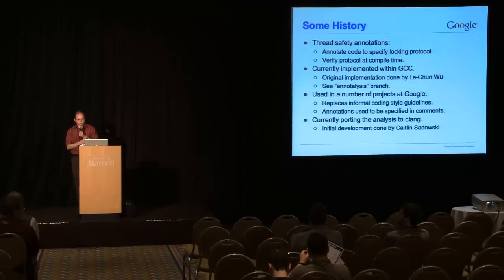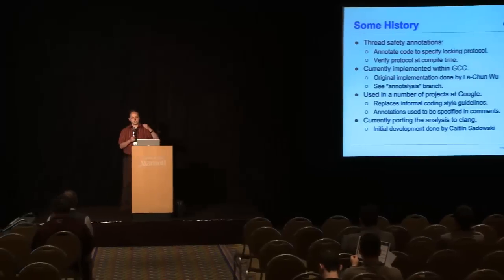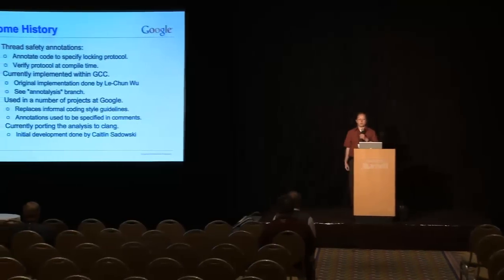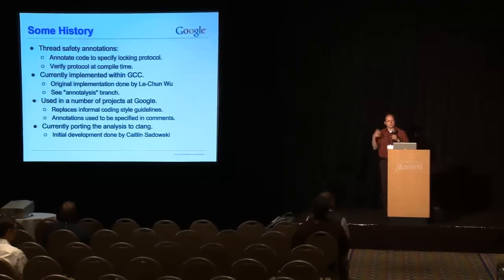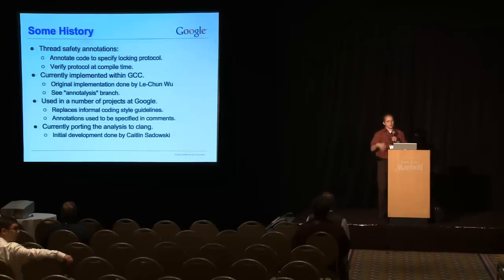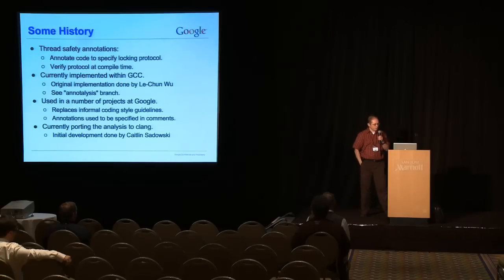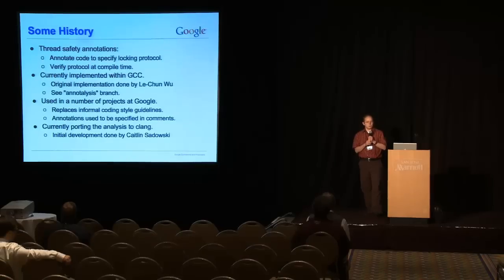So that's a brief introduction to the annotations. I'm going to go into a little bit more detail about what all they are. So first, some history. As I mentioned, what we're really doing is just like you have types to specify your signature of methods and the interface of methods in a class, these thread annotations sort of specify the locking protocol, the threading interface to a class. They're currently implemented within GCC. The original implementation was done by a Google employee by the name of Le Chun.